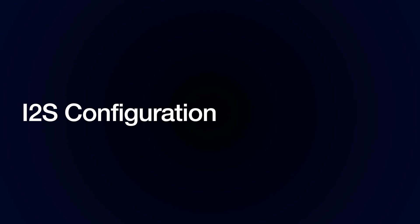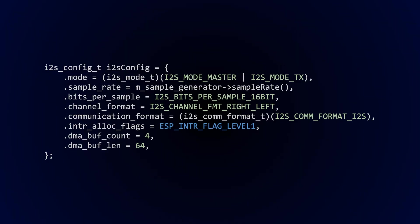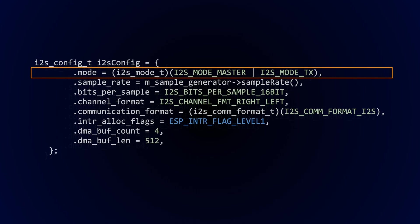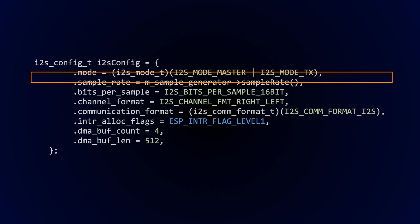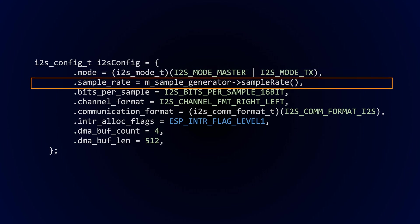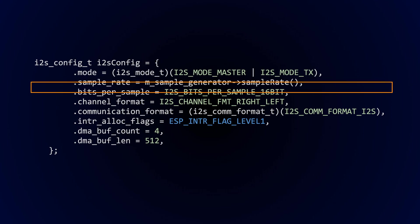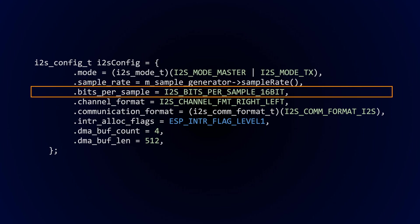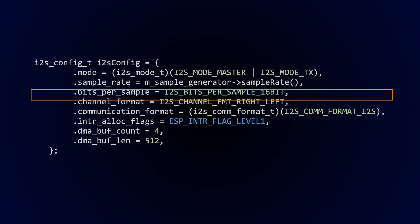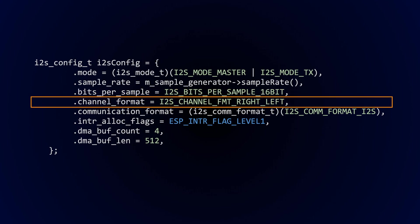So that's all the wiring up taken care of, let's have a look at the code. Here we have the I2S configuration. We'll be running in master mode and transmitting data. We'll take our sample rate from whatever is being used to generate our samples either directly from a wave file or from a generated signal. We'll output 16 bits for each sample. And we'll be outputting both left and right channels.